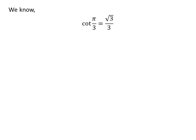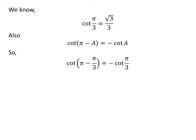We know the value of cotangent of pi upon 3 is square root of 3 upon 3. We also know the trigonometric identity cotangent of pi minus a is equal to minus cotangent of a. The proof of this identity is given in the video appearing in the upper right corner, and the link is also given in the description section.